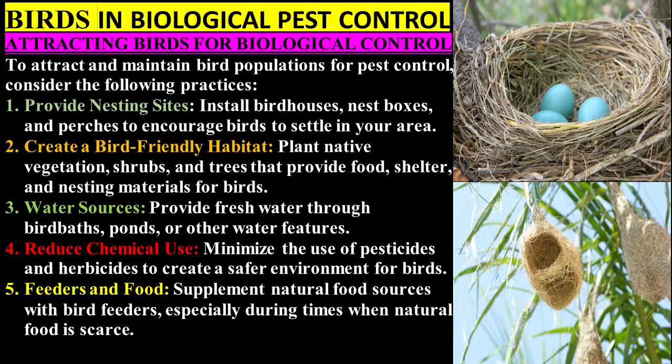Attracting birds for biological control: consider the following practices. Provide nesting sites — install bird houses, nest boxes, and perches to encourage birds to settle in your area. Create a bird-friendly habitat by planting native vegetation, shrubs, and trees that provide food, shelter, and nesting materials. Provide fresh water through bird baths, ponds, or other water features. Minimize the use of pesticides and herbicides to create a safer environment for birds. Supplement natural food sources with bird feeders, especially during times when natural food is scarce.